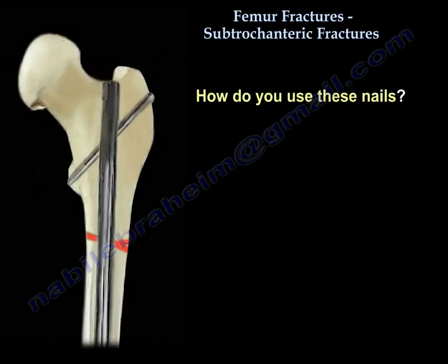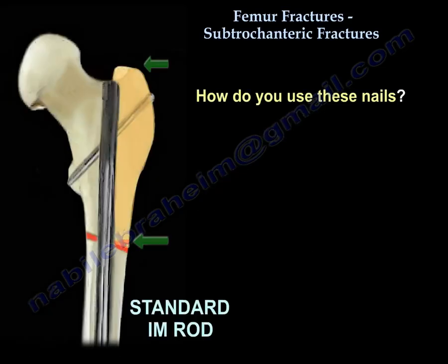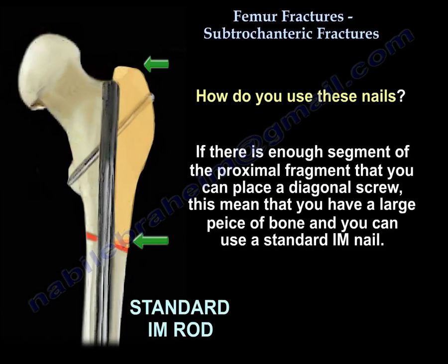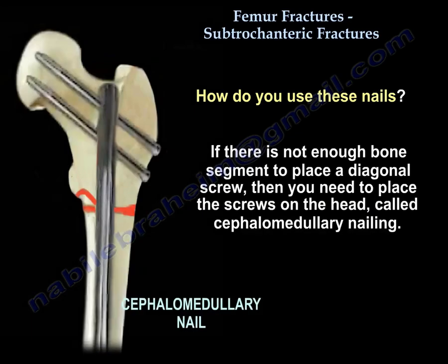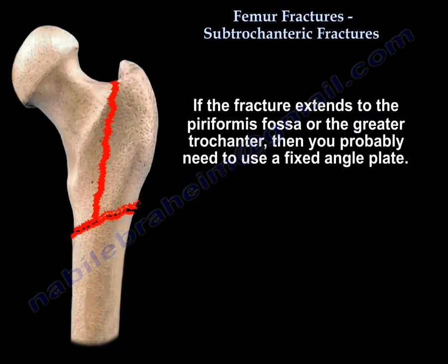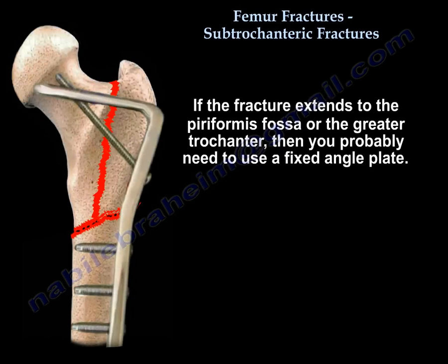Regarding nail selection: if there is enough proximal fragment to accommodate a diagonal screw, meaning you have a large proximal piece, then you can use a standard nail. If there is not enough bone for a diagonal screw, you need screws going into the head — this is called a cephalomedullary nail. If the fracture extends into the piriformis fossa or greater trochanter, you will likely need a fixed-angle plate.